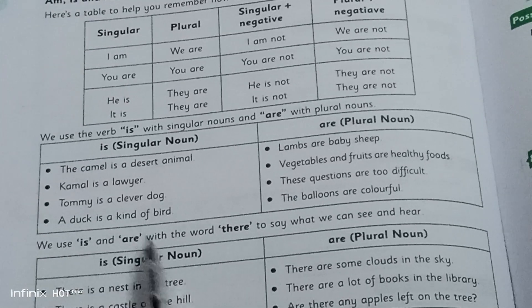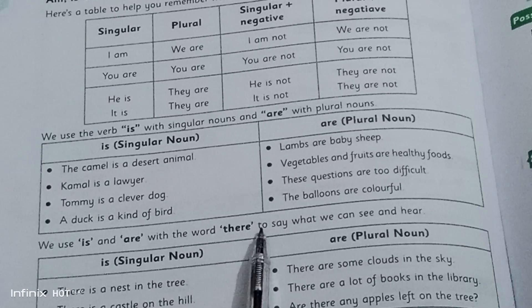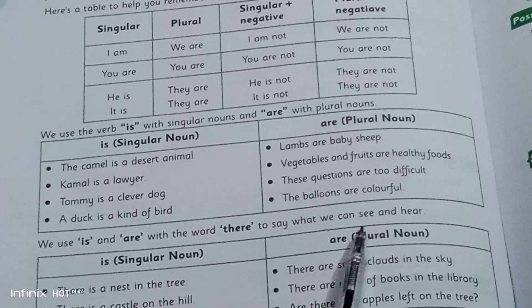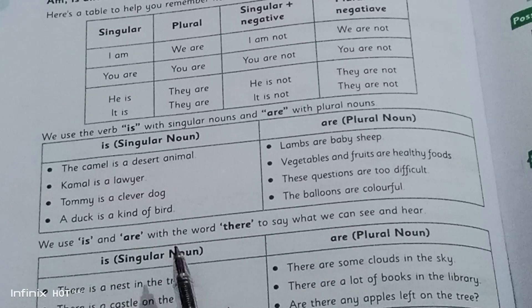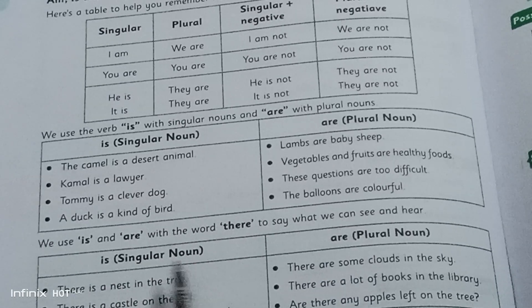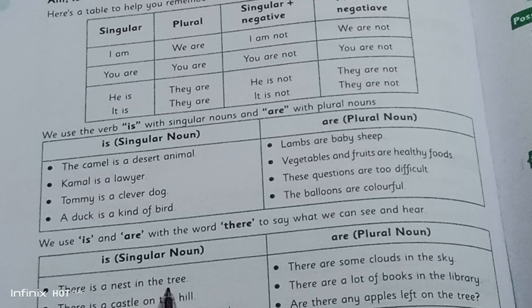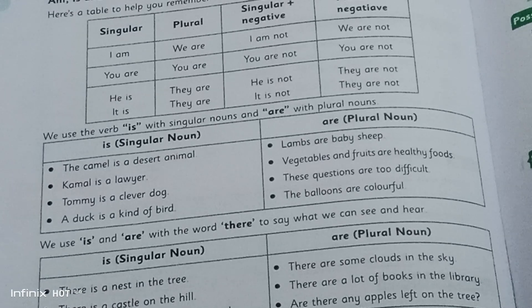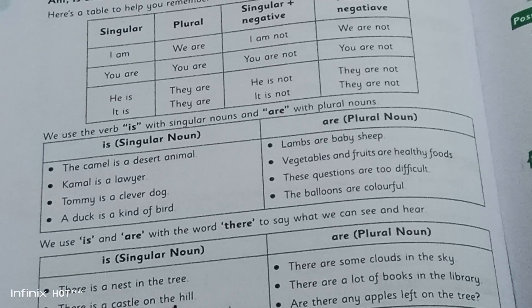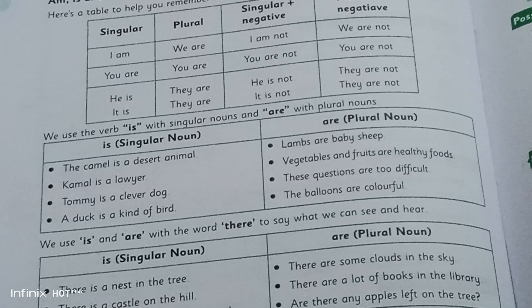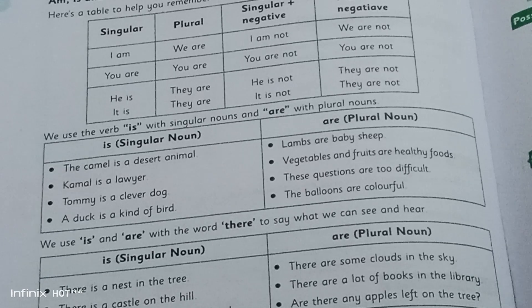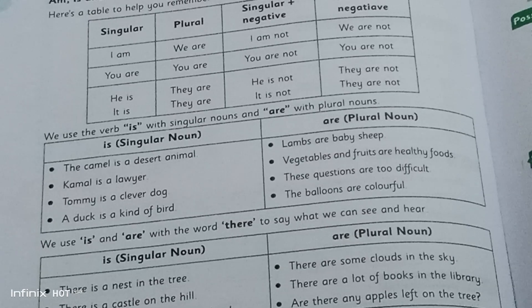We also use 'is' and 'are' with the word 'there'. It depends on the noun: there is a nest in the tree — nest is singular, so we use 'is'. There is a castle on the hill — castle is singular. There is a fence around the school — fence is singular, so we use 'is' with 'there'.